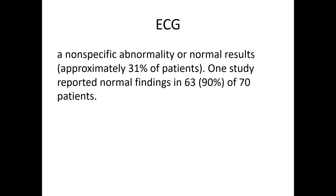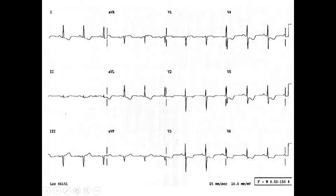Regarding the ECG in aortic dissection: the ECG may be normal — in a study of 63 patients, 90% had normal ECGs. However, if you see diffuse ST-segment depression in all precordial leads and in leads I and aVL, with slight ST elevation in aVR and V1, you may consider severe myocardial ischemia. This pattern can occur in left main disease, multi-vessel coronary disease, but also in aortic dissection, severe anemia, pulmonary embolism, electrolyte disturbance such as hypokalemia, or tricyclic antidepressant toxicity. It is very important to rule out all causes.